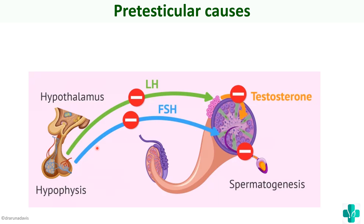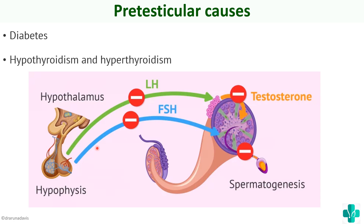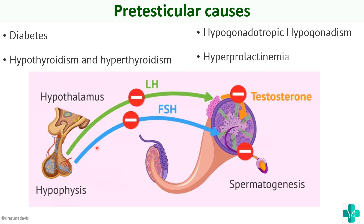Some common examples of diseases that cause pre-testicular infertility are diabetes, hypothyroidism as well as hyperthyroidism, hypogonadotropic hypogonadism, as well as hyperprolactinemia. These are different causes which affect either GnRH or LH and FSH production.